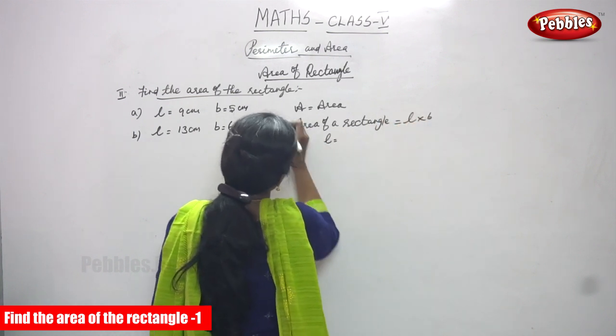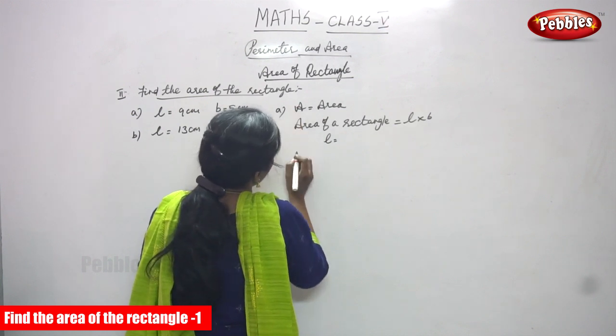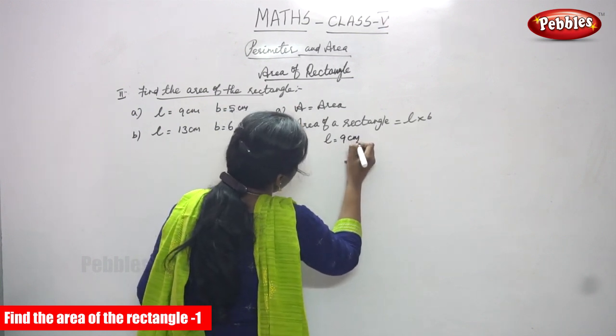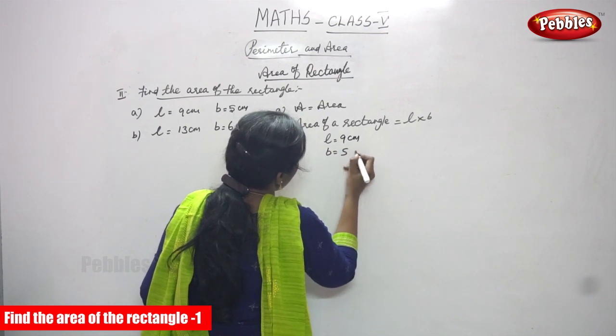In that sum, first sum, A sum, L is equal to what is given, 9 cm and B is equal to 5 cm.